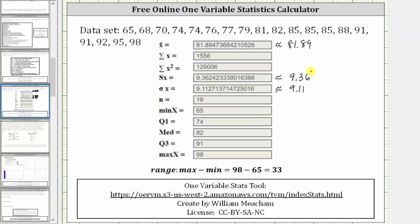The population standard deviation is approximately 9.11. And the range, which we calculate manually, is equal to the max minus the min. And therefore, the range is equal to 33.